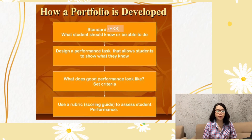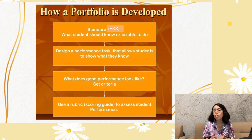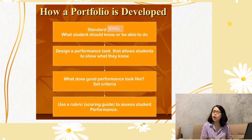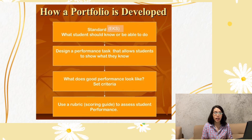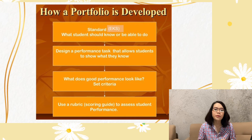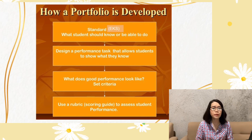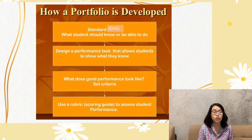How is a portfolio developed? First, we have the standard EKS, or Essential Knowledge and Skills — that is what students should know or be able to do, which are your objectives. Then we have the design and performance tasks that allow students to show what they know. Next is setting criteria for what good performance looks like, using a rubric or scoring guide to assess students' performance. The rubrics can either be holistic or analytic, and it depends on the teacher, who will weigh it according to the topic, learning objectives, and the capabilities and capacities of his or her students.